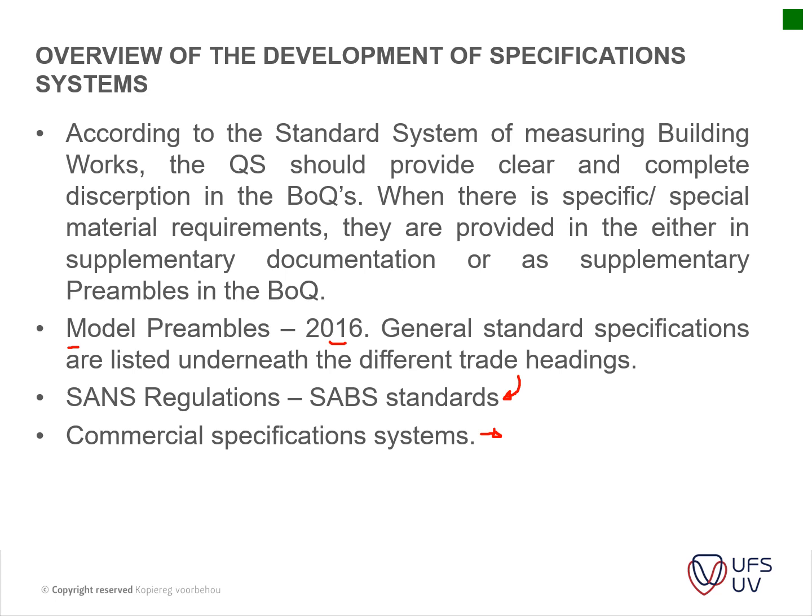Commercial specification systems are ad hoc specifications developed by specific clients or consultants. For instance, a developer like Greenpoint would have a certain set of specific standards captured in a commercial system of specifications, which is then incorporated into your tender document. Another example would be Dulux having their own application specifications - specifying how paint should be applied and what the moisture content of the walls should be - and that specification is incorporated into your tender document.